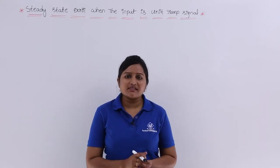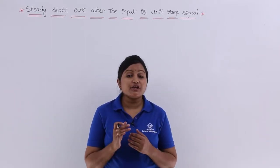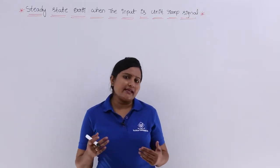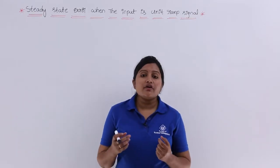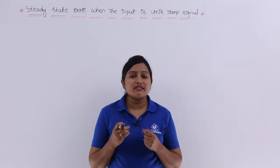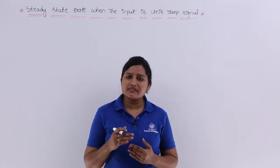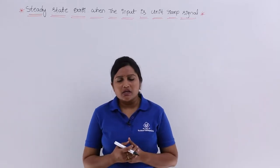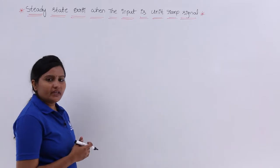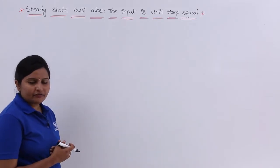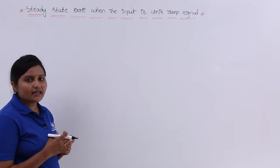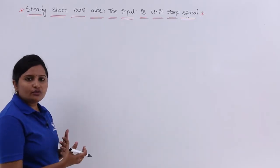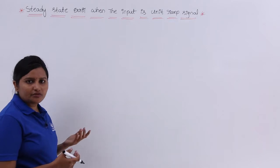In this video we will discuss steady state error when the input is unit ramp signal. In the previous video we calculated steady state error when the input is unit step signal, and in this video we will calculate the same for unit ramp input. We already have a couple of videos related to steady state error, static error constants, and type order of the system, so you need that knowledge before getting into this video.